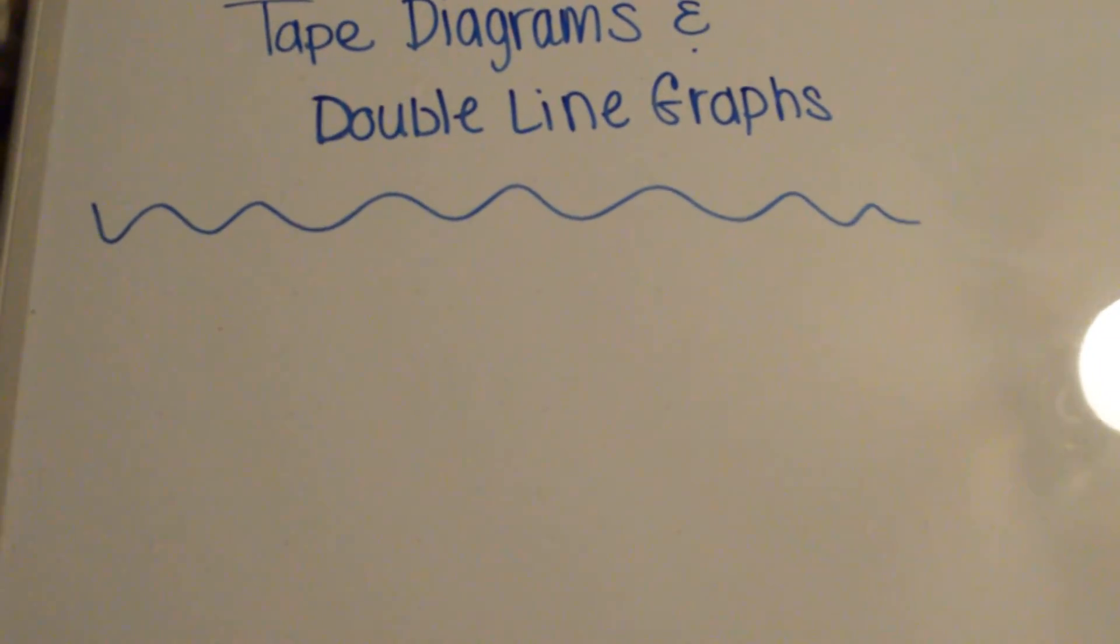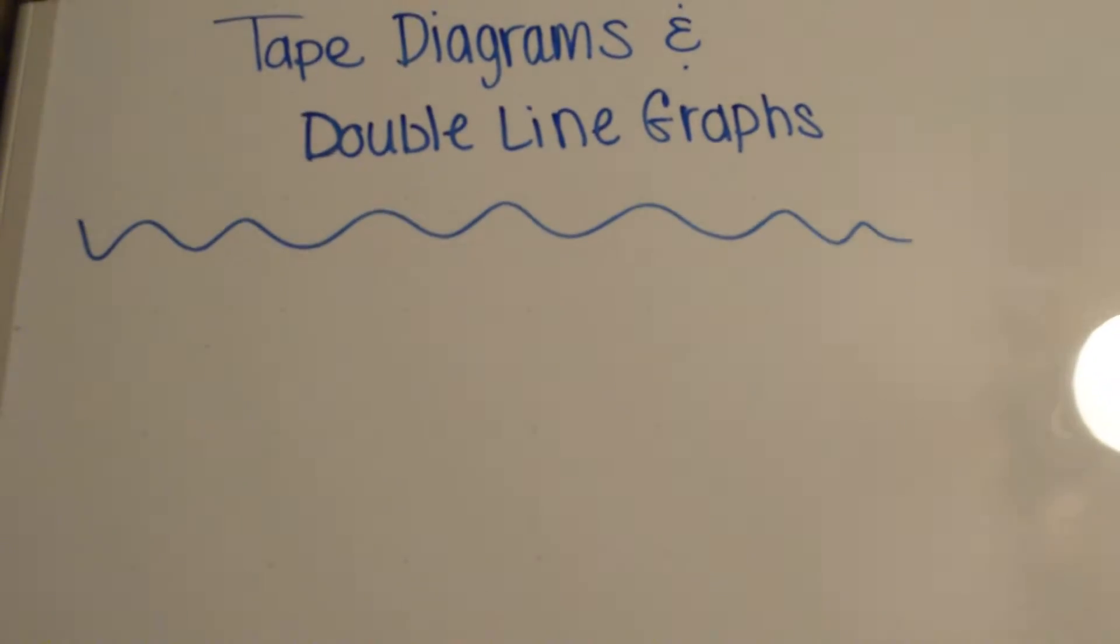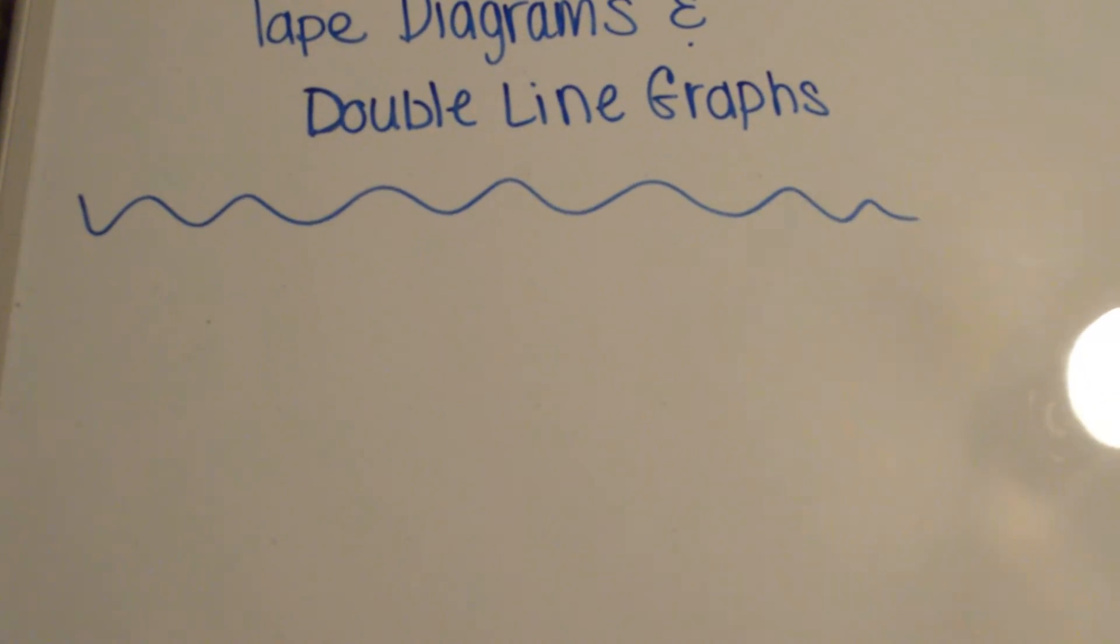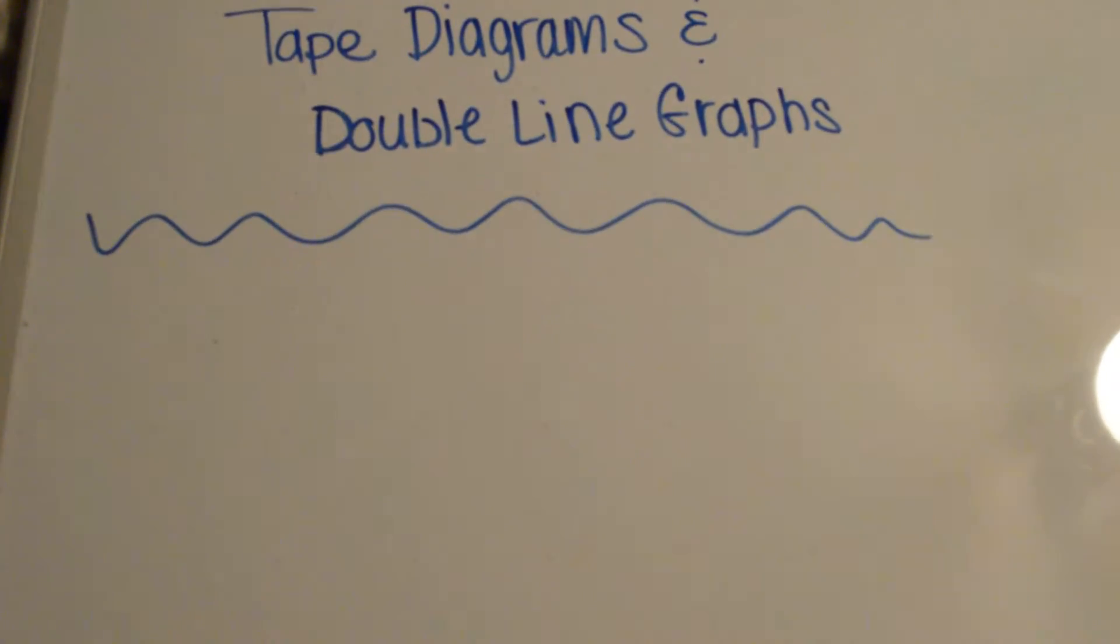Today class, we're going to learn about tape diagrams and double line graphs. These are ways that you can examine your ratios and proportions. So the first thing that we're going to learn about are tape diagrams.